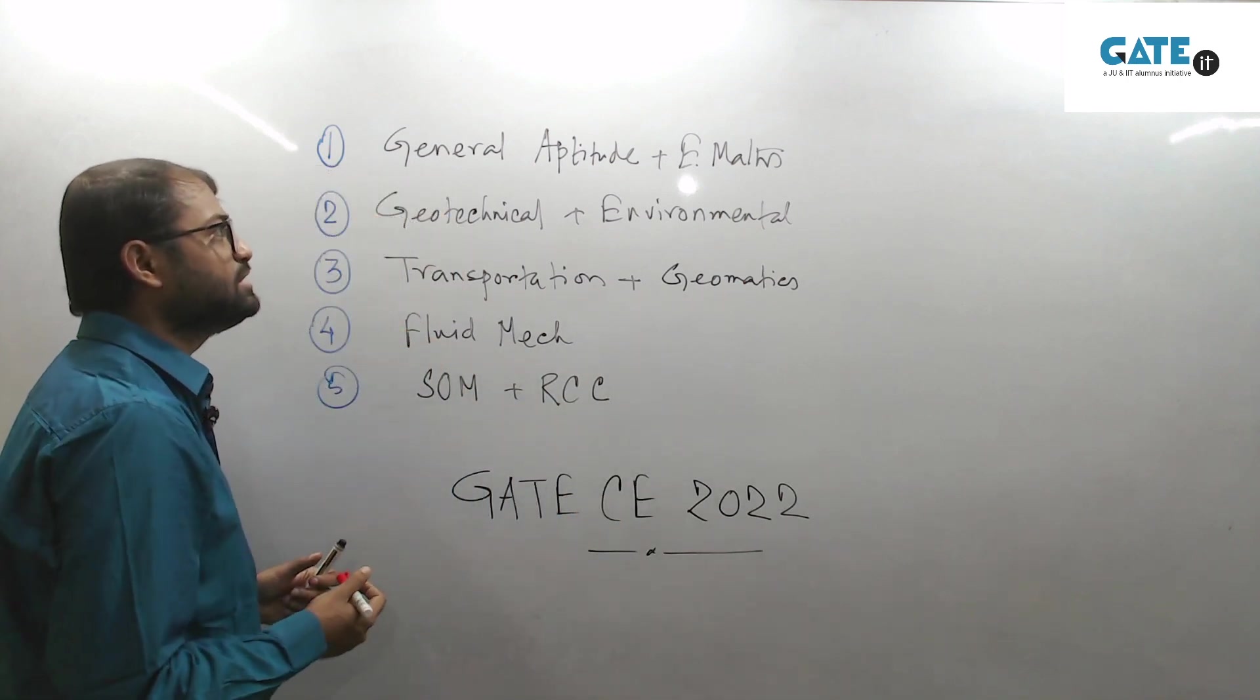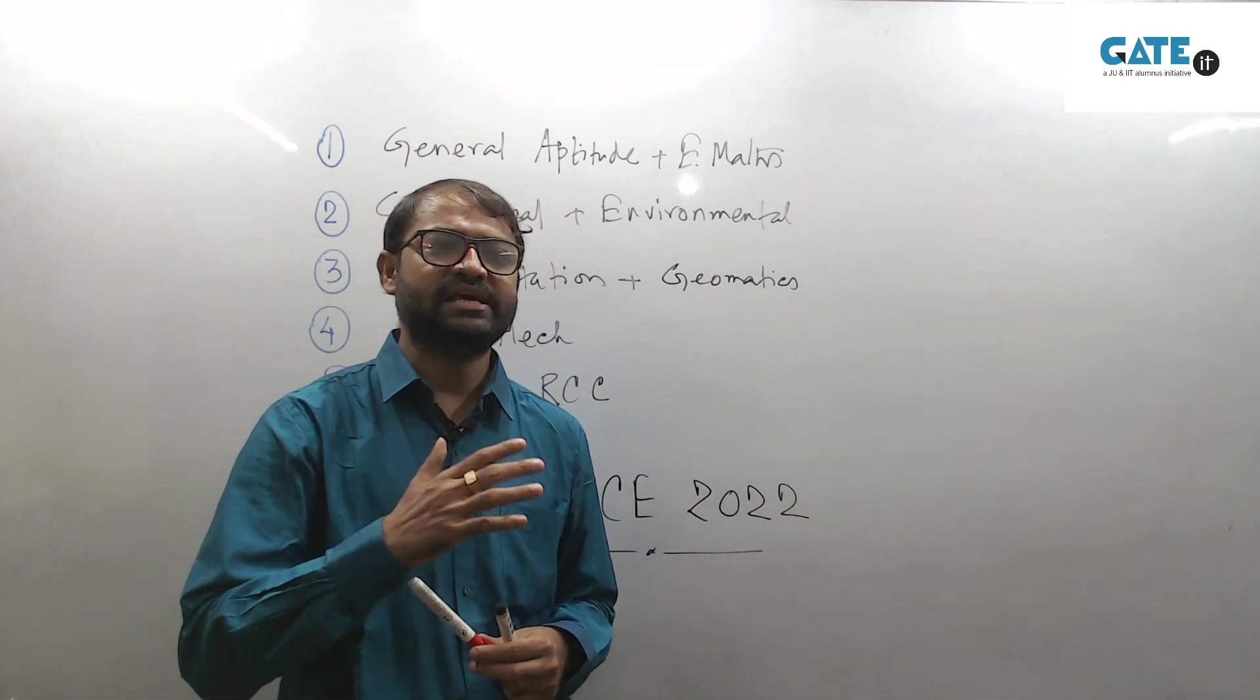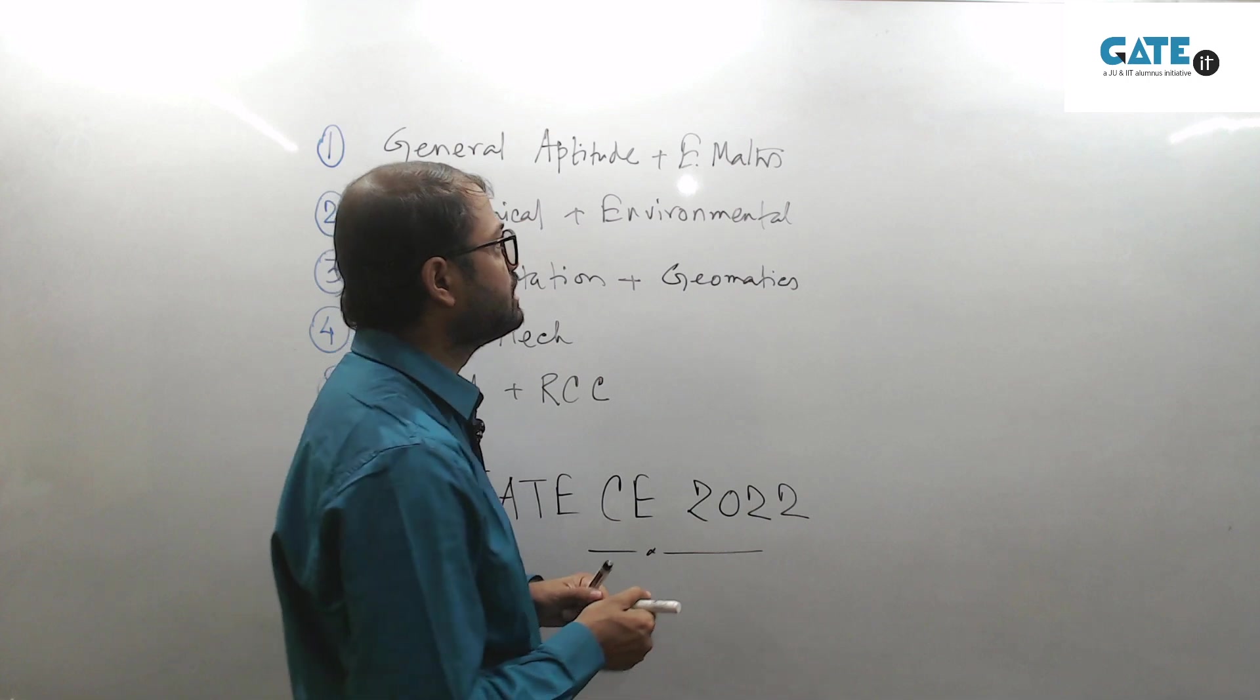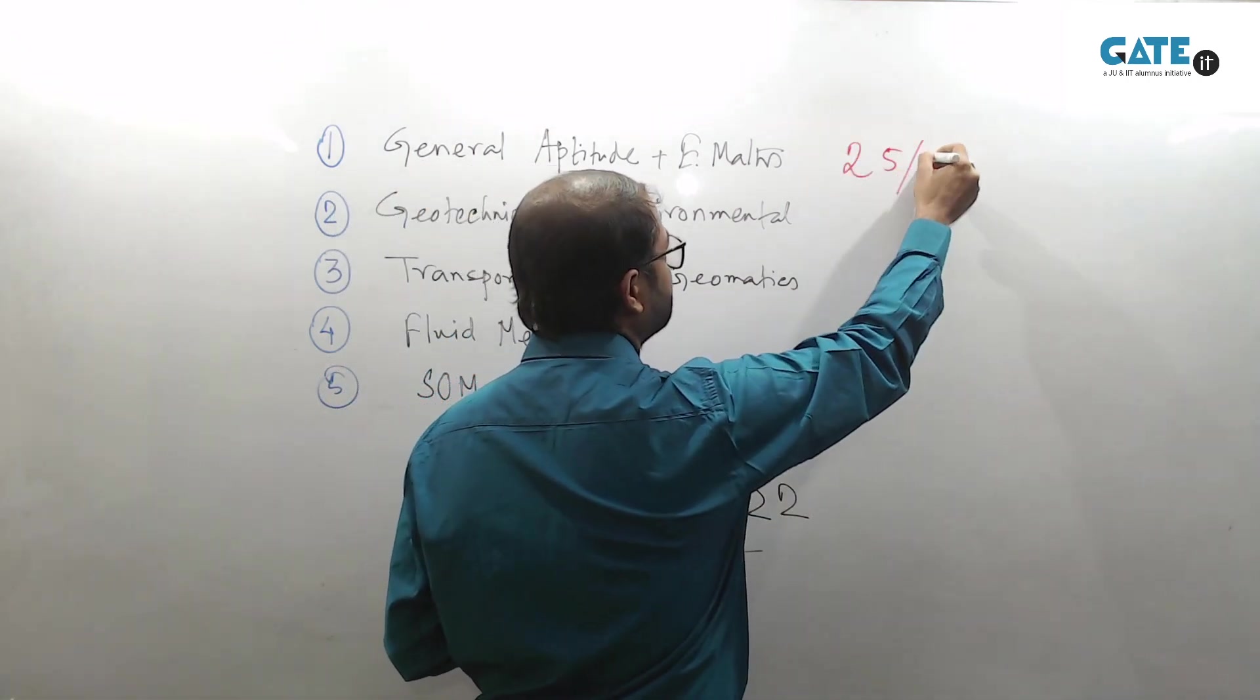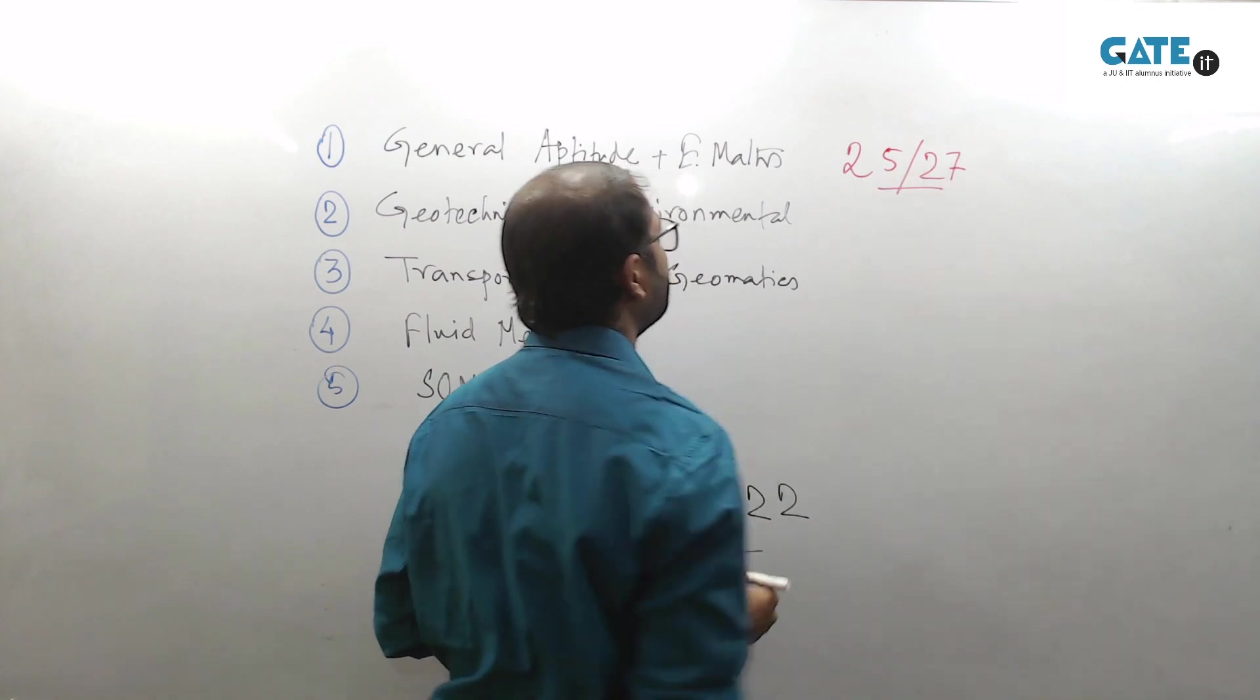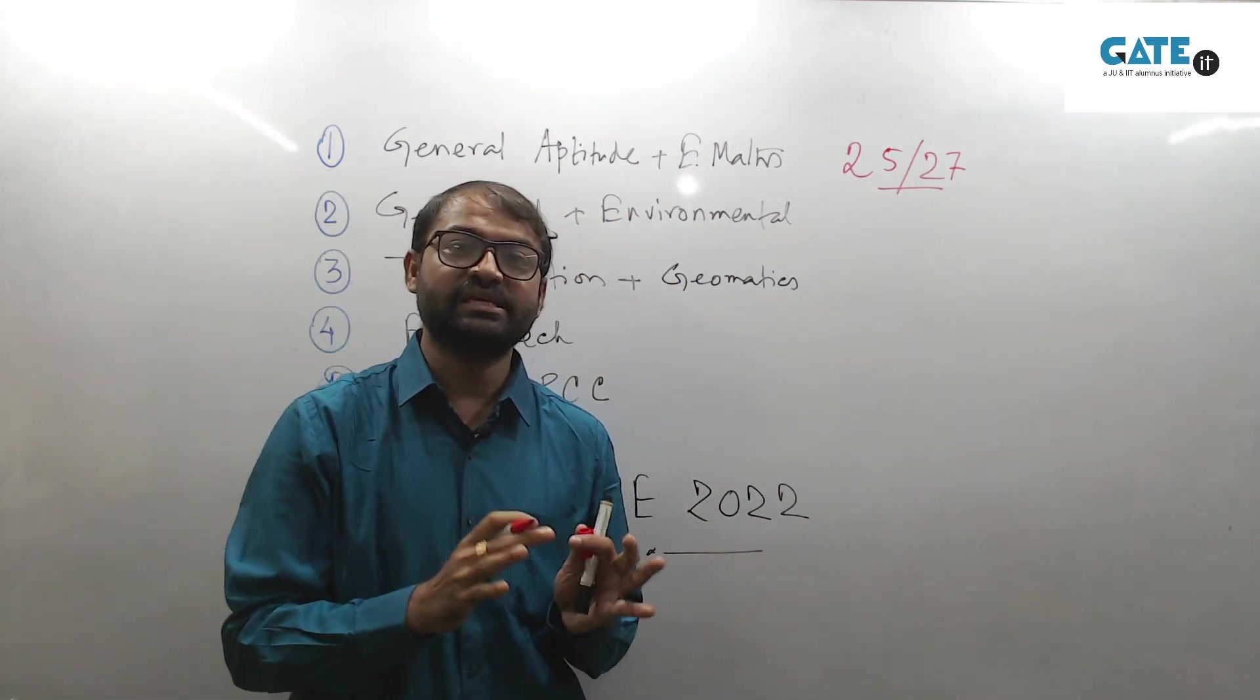From general aptitude we know you will get 15 marks, and for mathematics it ranges between 10 to 12 marks. So from general aptitude and engineering mathematics you are going to get 25 to 27 marks, which is comparatively easy to score.